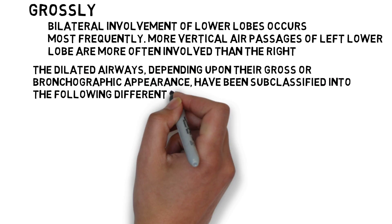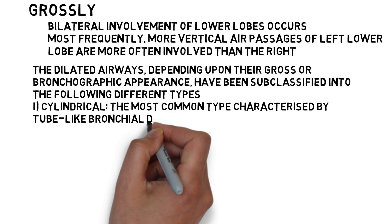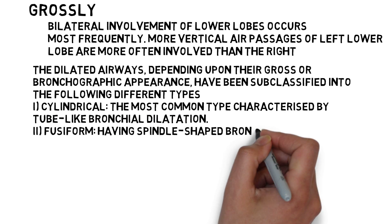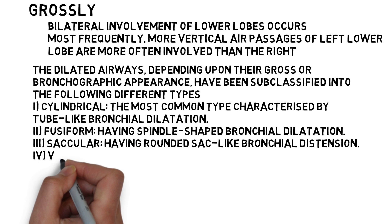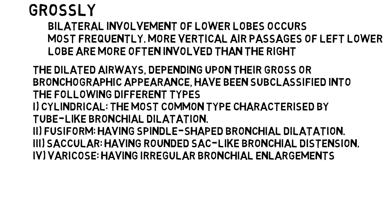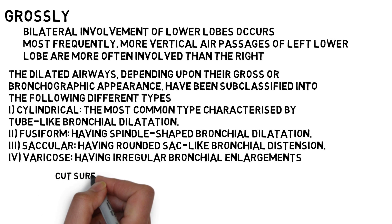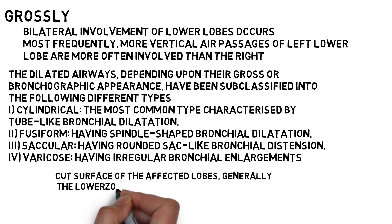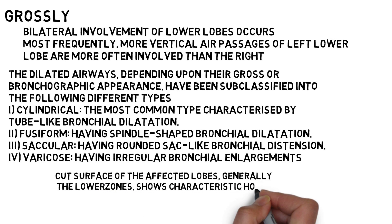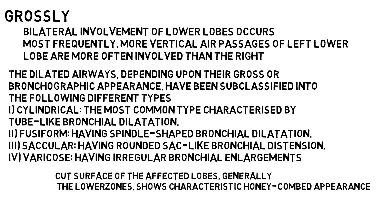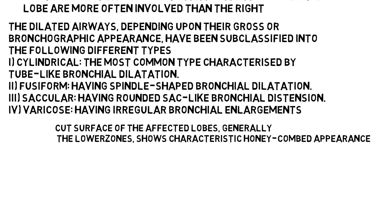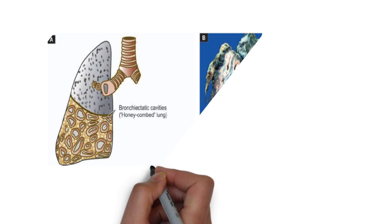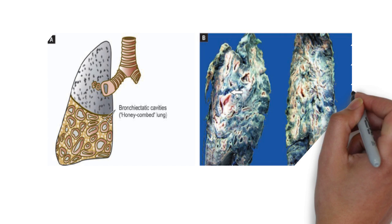The dilated airways have been subclassified into the following types: cylindrical, the most common, characterized by tube-like bronchial dilation; fusiform, having spindle-shaped bronchial dilation; saccular, having round sac-like bronchial distensions; and varicose, having irregular bronchial enlargement. The cut surface of the affected lobe shows a characteristic honeycomb appearance. The bronchi are extensively dilated near the pleura, their walls are thickened, and the lumina are filled with mucus or mucopus. The intervening lung parenchyma is reduced and fibrotic. In the figure, the honeycomb-like appearance on the lower side of the lungs can be observed.